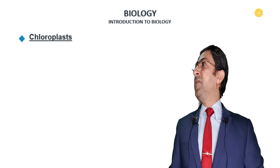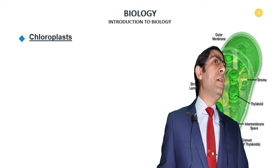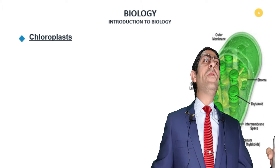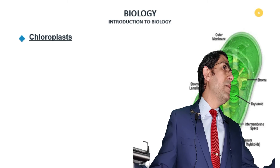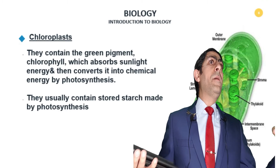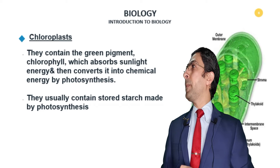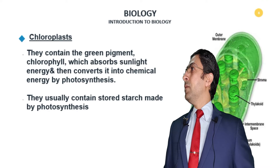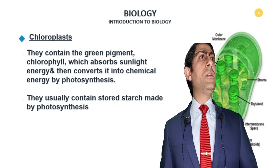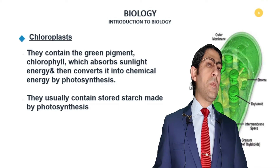The cell wall prevents the bursting of the plant cell. If the plant becomes turgid, the cell wall plays a role against bursting. It also absorbs water as it is fully permeable.